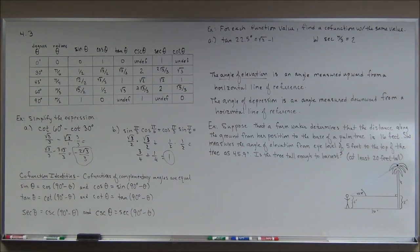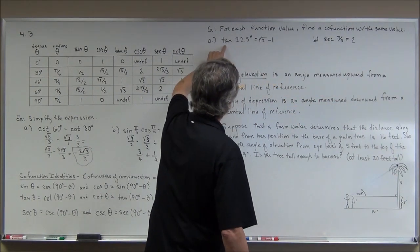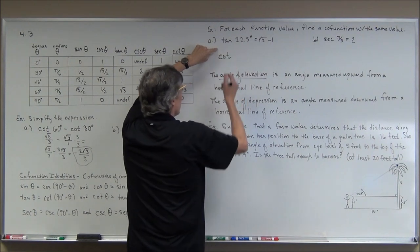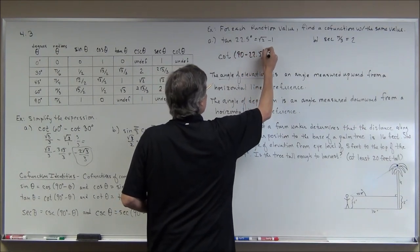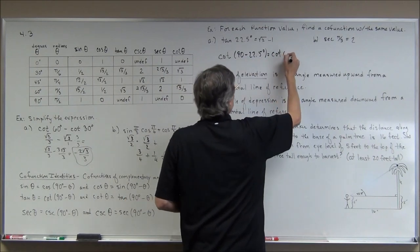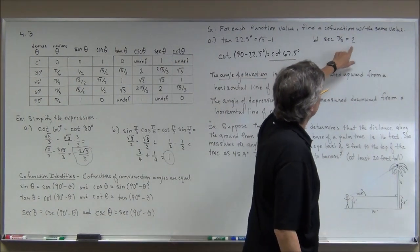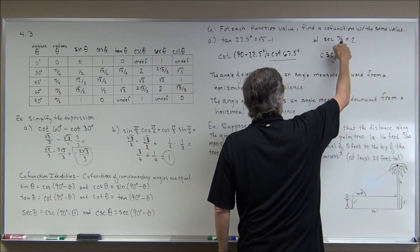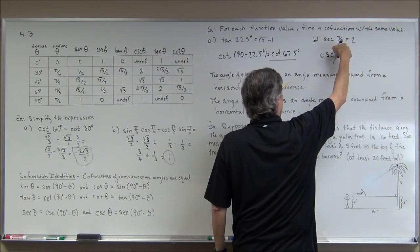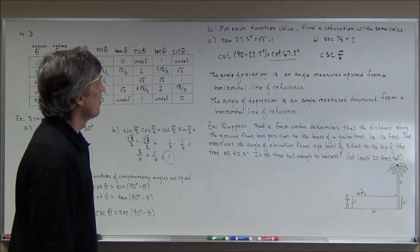We can use co-function identities to find equivalent expressions. For example, the co-function of tangent is cotangent, so tangent(22.5°) equals cotangent(90° − 22.5°) = cotangent(67.5°). Similarly, secant(π/3) = 2, and since the co-function of secant is cosecant and 90° − 60° = 30° (or π/6 radians), we get cosecant(π/6), written in radians to match the original.